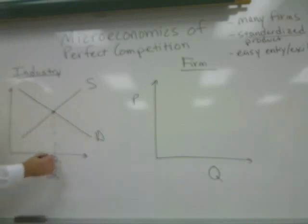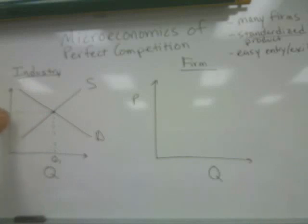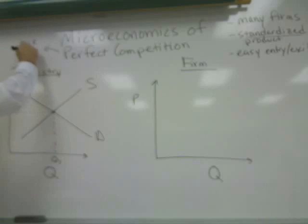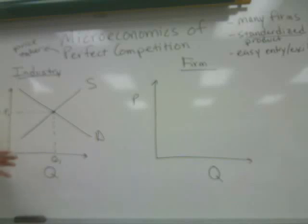The equilibrium point gives us both the total market quantity produced by all firms and the equilibrium product price. This is the price at which all firms in the industry must sell their product to remain competitive. That is why, in perfect competition, the perfectly competitive firms are what is known as price takers — they cannot charge a price of their own choosing but must charge the equilibrium market price or risk being priced out of the market.